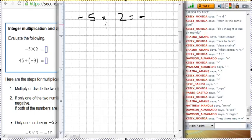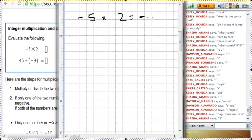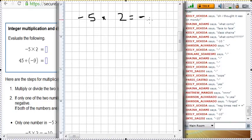Now that we've dealt with the sign, what are the numbers? What is 5 times 2? Keeley already threw it out there. 10. So, negative 5 times 2 is negative 10.